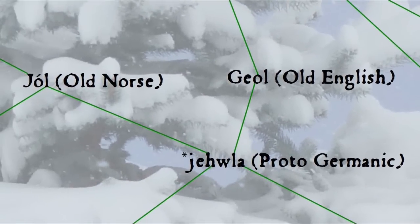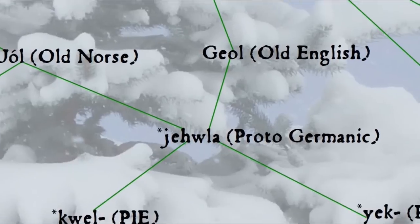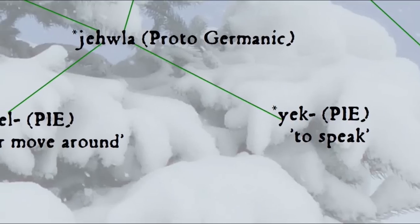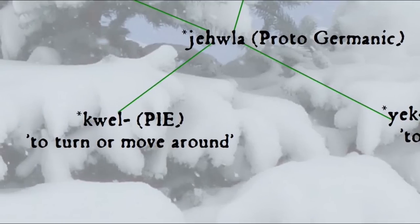We don't know for sure where this dramatic root comes from, but it might come from an Indo-European word 'yek' which means to speak, and also gives us words such as joke, juggle, and jewel, probably through association with festivity. Or it could come from an Indo-European word 'qöl' which means to turn or move around, and also gives us words such as wheel and cycle, probably referring to the turn of the year that happens at Yule.